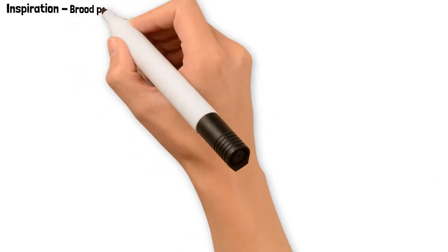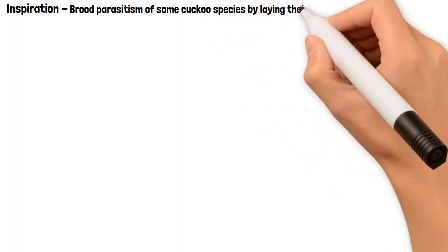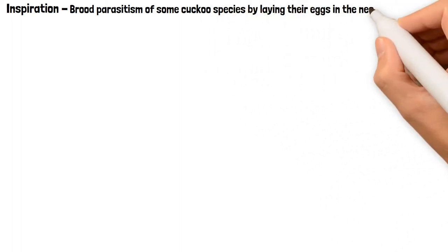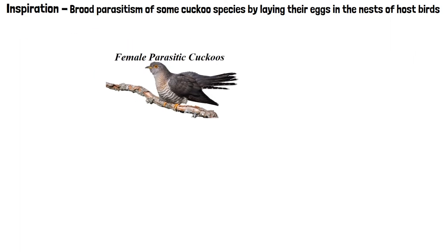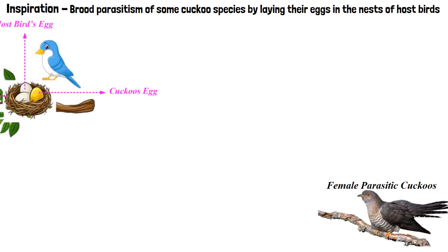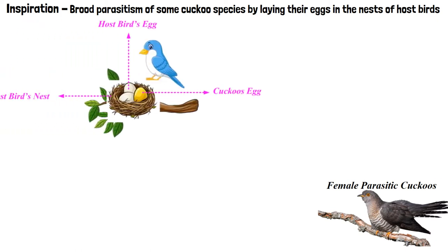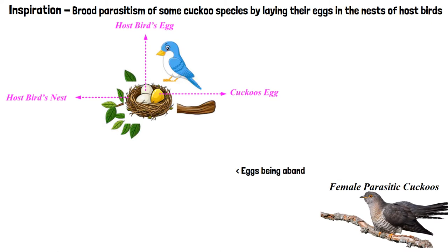The cuckoo search algorithm was inspired by the obligate brood parasitism of some cuckoo species, by laying their eggs in the nests of host birds. Some cuckoos have evolved such that female parasitic cuckoos can imitate various colors and patterns of the eggs of a few chosen host species. This reduces the probability of the eggs being abandoned, so reproductivity increases.